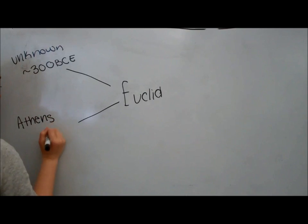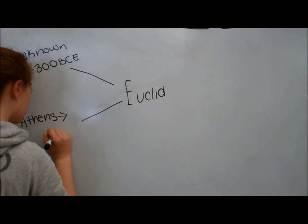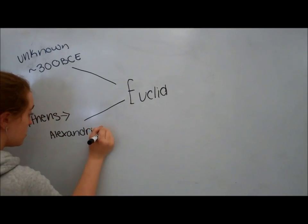Euclid lived in Athens for the beginning of his life. He studied at Plato's Academy until he realized that he learned all that he could. Then he moved to Alexandria and started a school there.